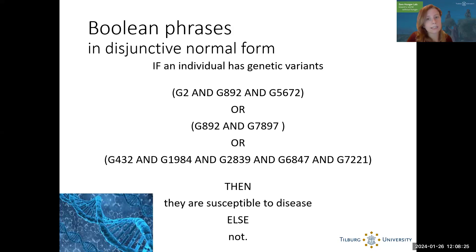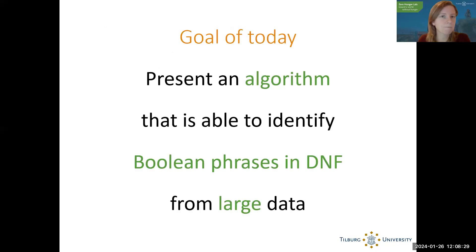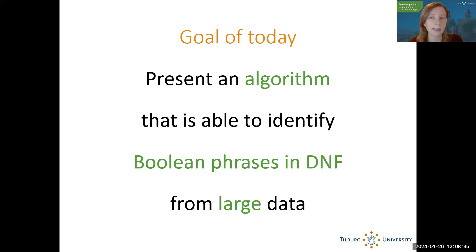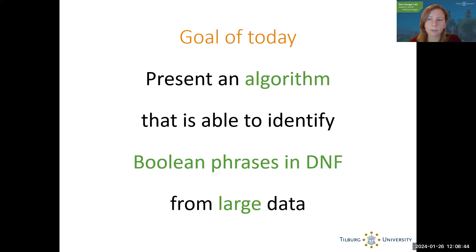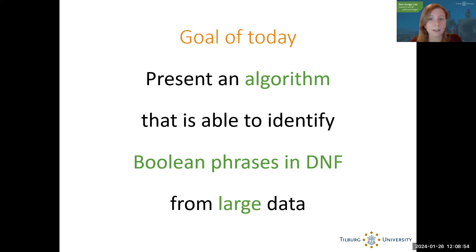If we have a machine learning model that analyzes genome data and gives results like this, that's very useful for understanding the disease and as a next step for developing drugs. Such models exist; however, they usually cannot handle very large amounts of data. The goal of IRELAND is to provide an algorithm that can identify Boolean phrases in DNF from large data — databases with thousands or tens of thousands of individuals and often millions of variants.